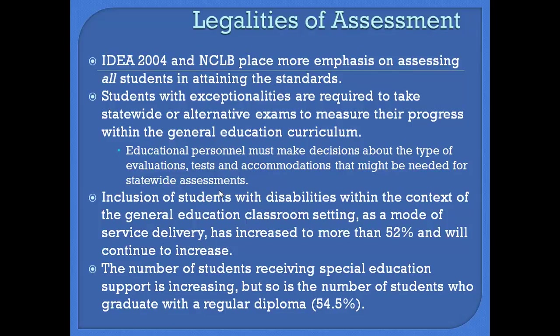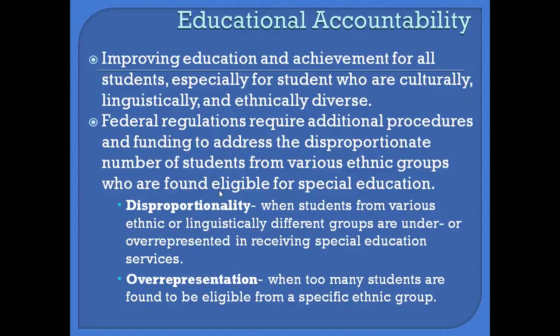So is the number of students who graduate with regular diplomas. Certainly more than 54.5% should be graduating with a regular diploma. Whenever you are a case manager — especially those going into secondary — you really need to think about whether a student can pursue a regular diploma. We can always pull them back, but if you start out with the idea that a child is not going to be successful, then we set up that child for failure.